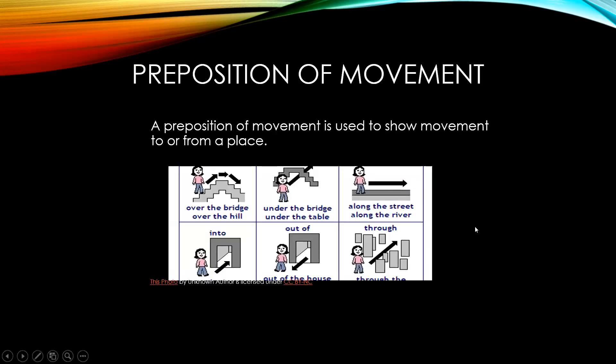The next one is preposition of movement. Here I'll give you an additional picture which might help you with proper understanding of movements. A preposition of movement is used to show movement to or from a place, which is quite easy to understand as they are less abstract than prepositions of place and time.